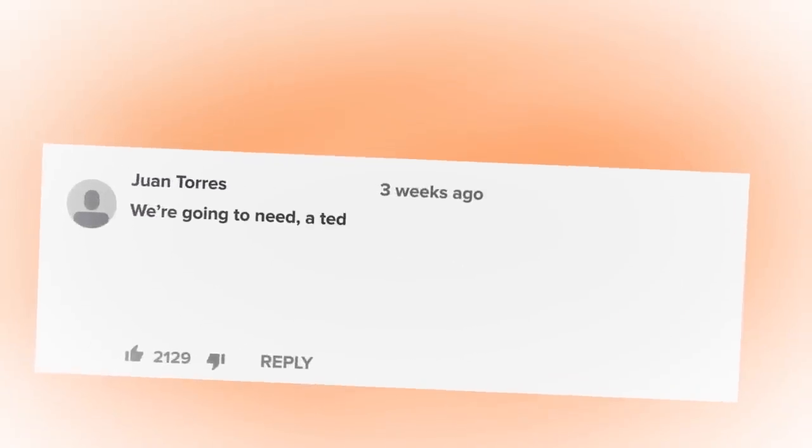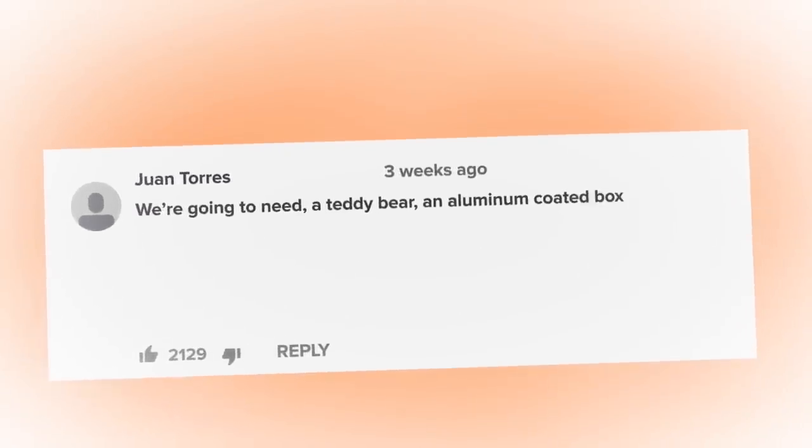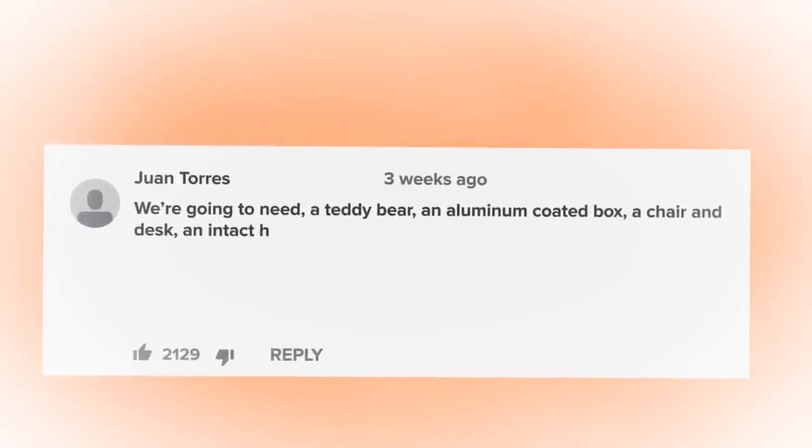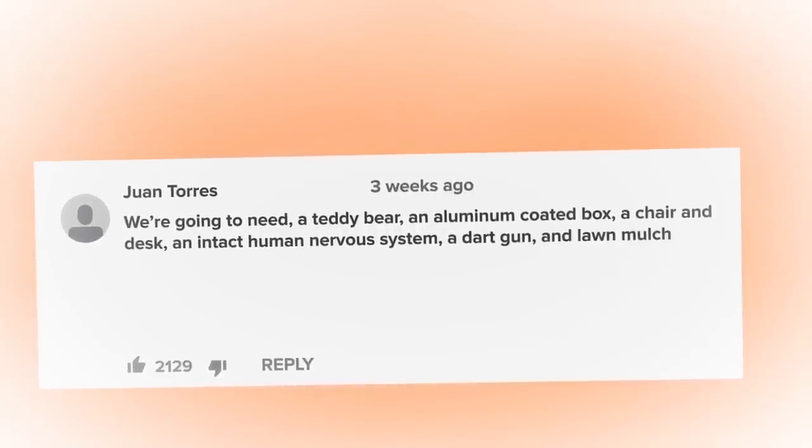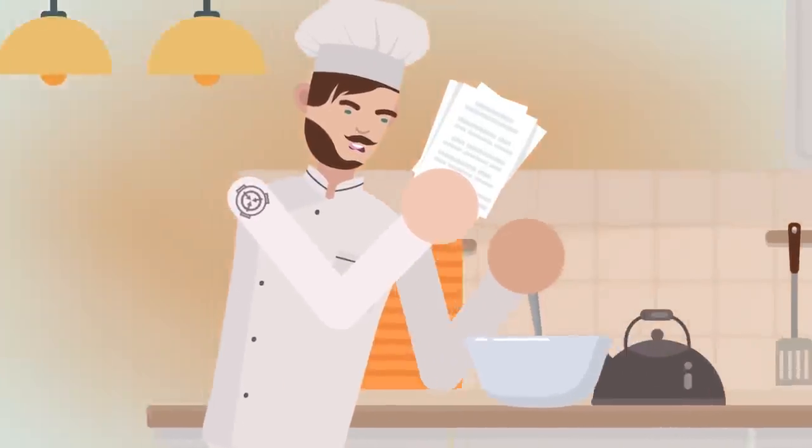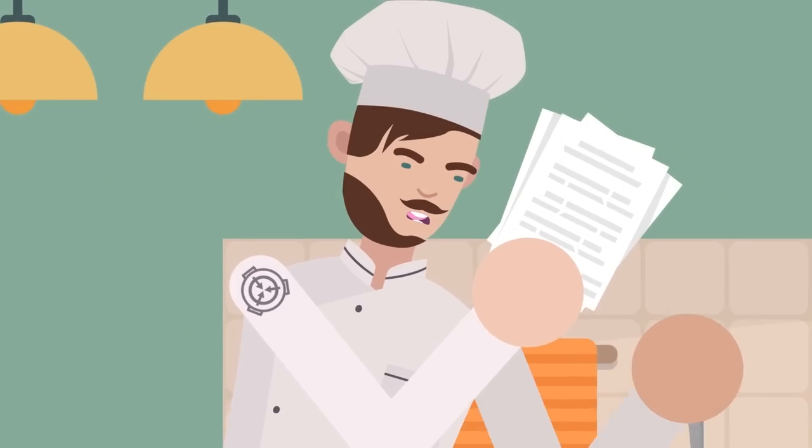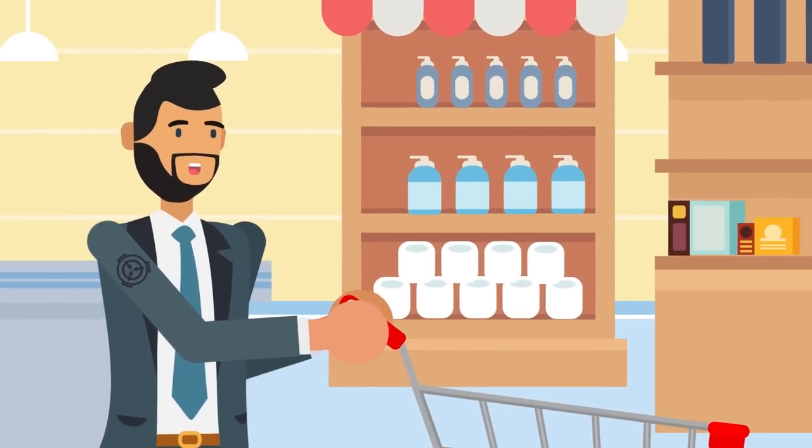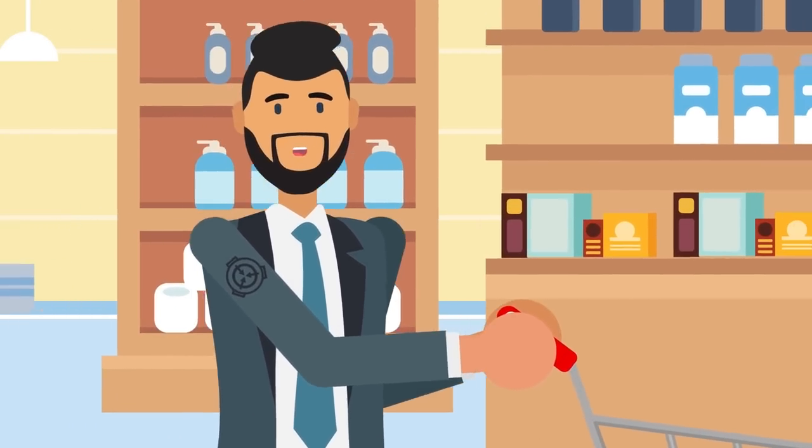You're right about one thing though: can't stand that lizard. Juan Torres said, 'We're going to need a teddy bear, an aluminum-coated box, a chair and a desk, an intact human nervous system, a dart gun, and lawn mulch.' Wait, wait, don't stop there. You're just going to give us a list of ingredients and not finish the recipe? I already went out and bought all that stuff, and the nervous system won't stay fresh forever.